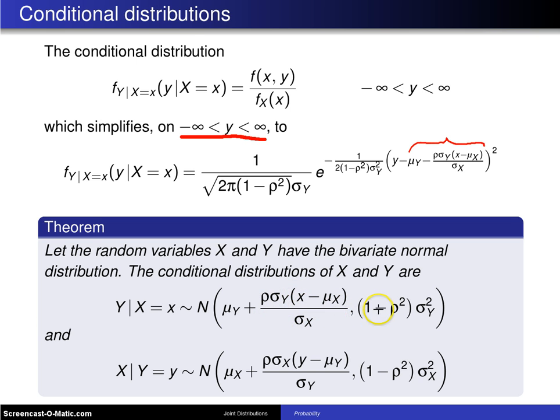Furthermore, the population variance is 1 minus rho squared, times sigma y squared.